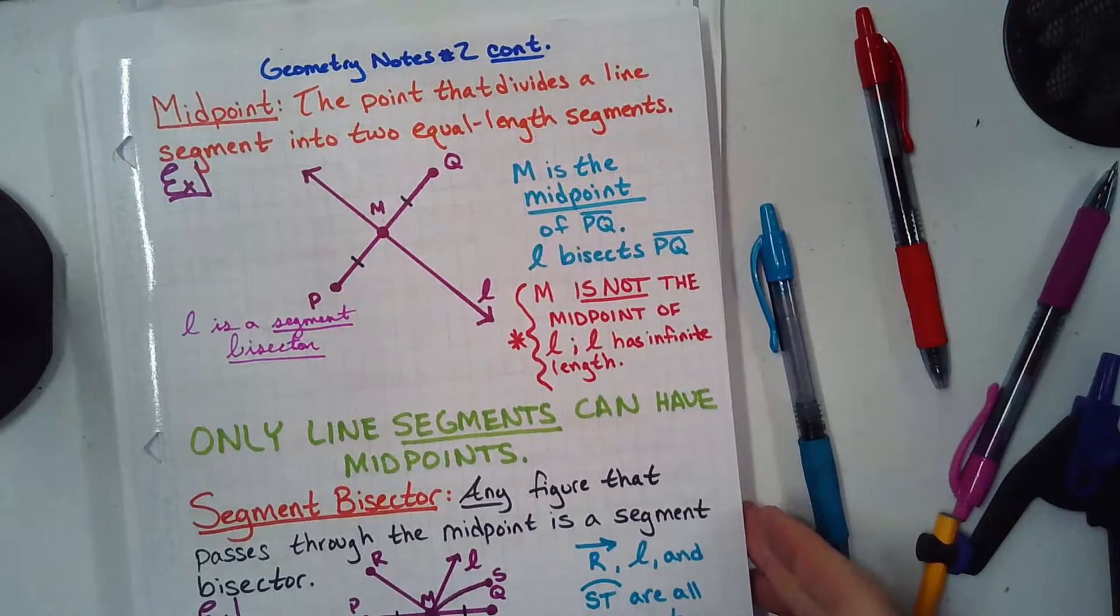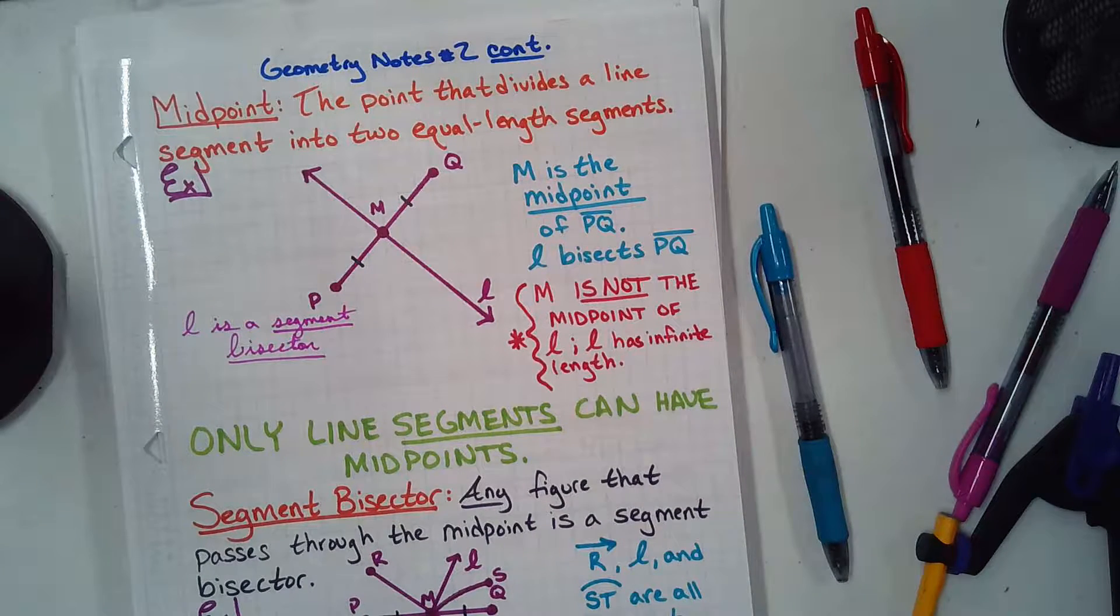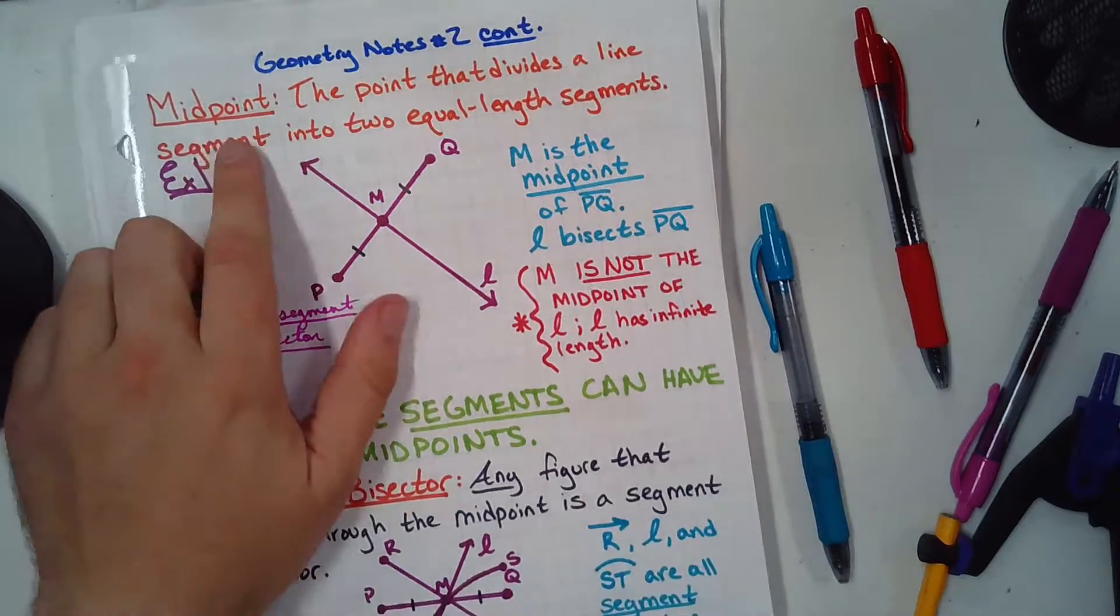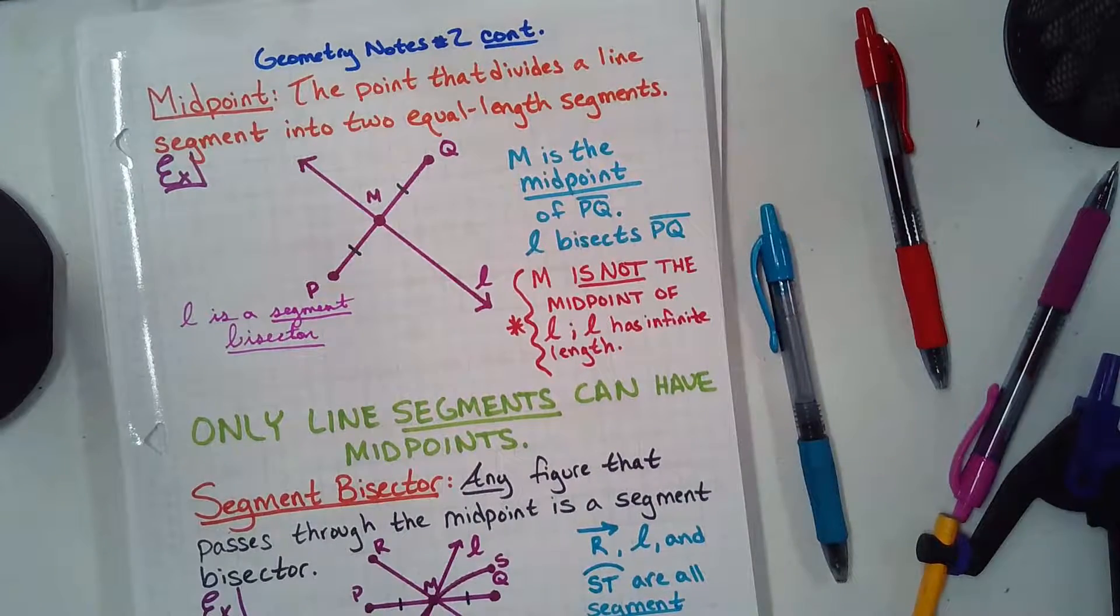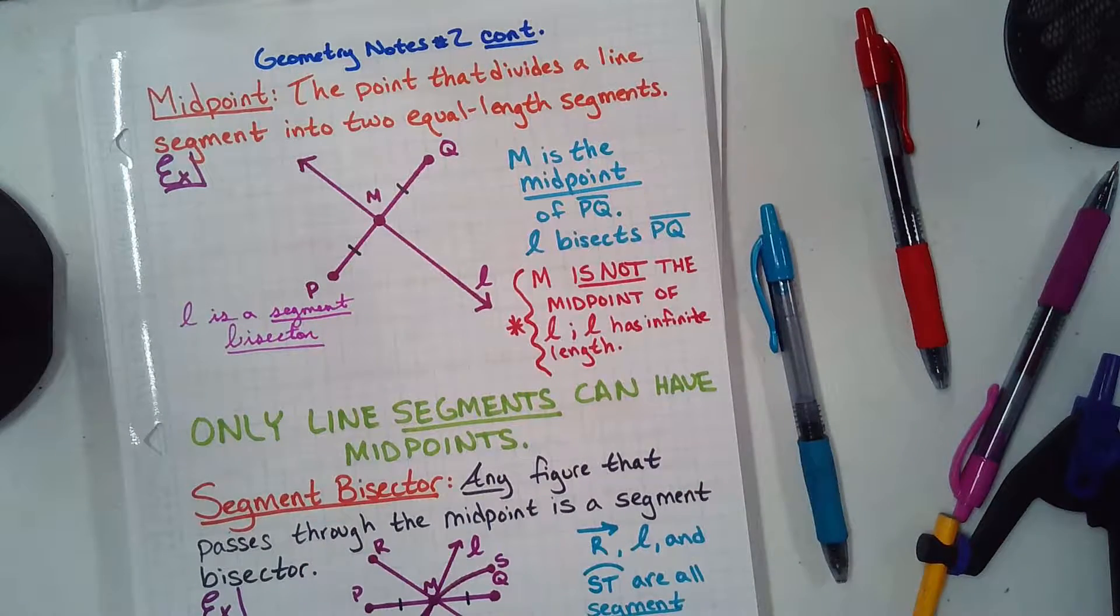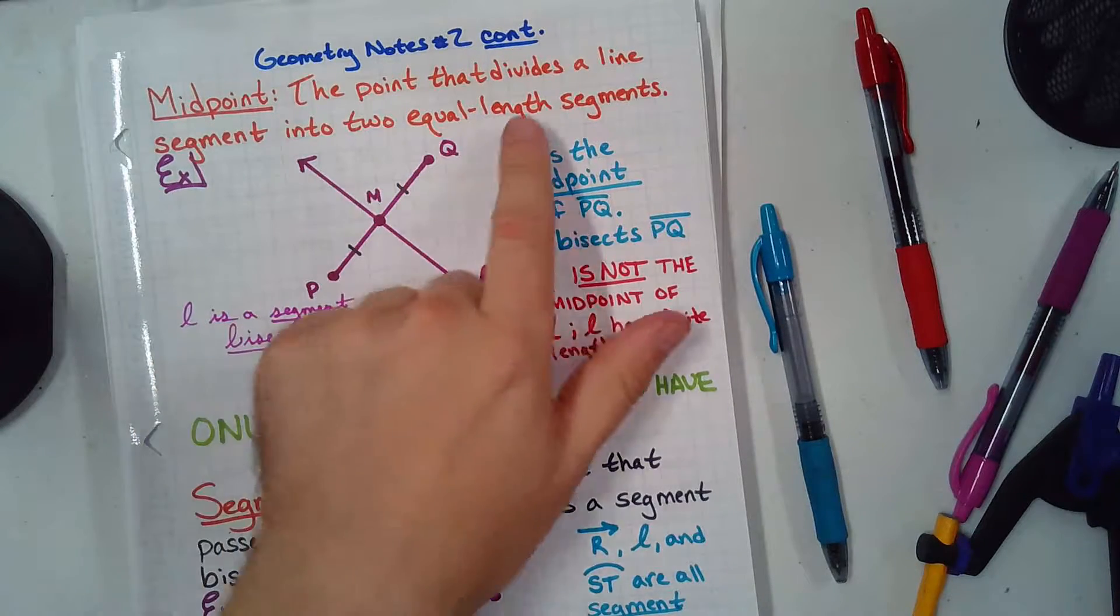Today we're talking about midpoints. Midpoint is just what it sounds like, which is convenient, right? It's an easy definition. Mid means middle. Point means... right? So, midpoint is a point that divides a line segment into two equal length segments.